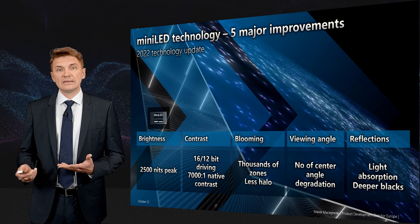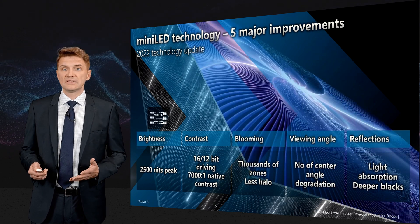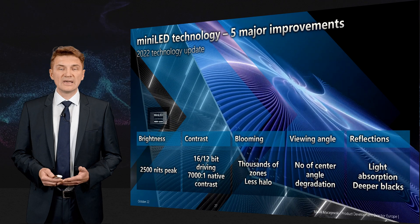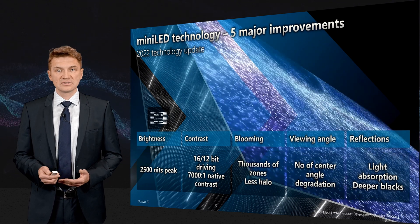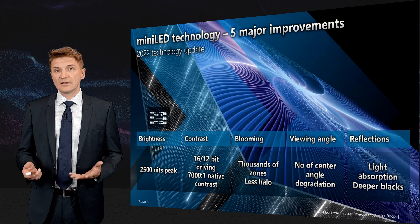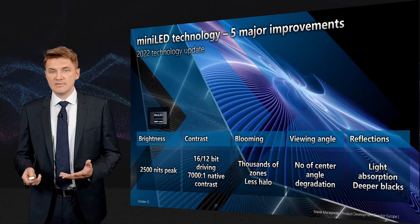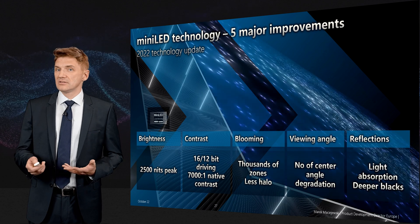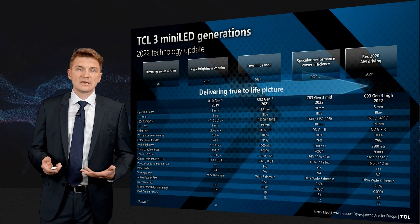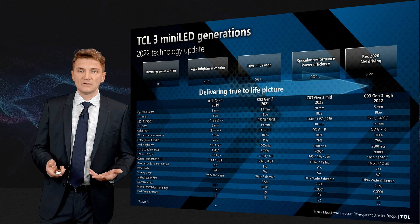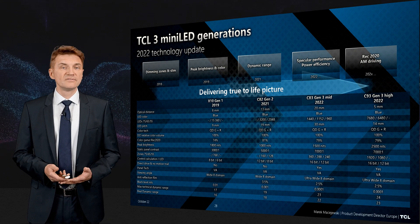Then there is viewing angle, which was improved last year and again improved this year — so when you move off-center, you still see saturated colors and good contrast. And then reflections, also improved last year and again this year, so that you see deeper blacks.